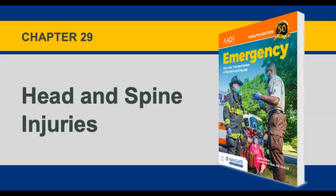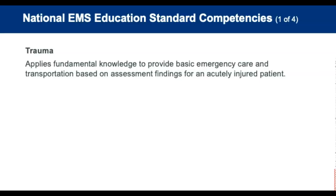Hello, and welcome to Chapter 29, Head and Spine Injuries of the Emergency Care and Transportation of the Sick and Injured, 12th edition. After you complete this chapter and the related coursework, you will understand how to manage trauma-related issues of the head and spine. You will learn how to recognize life threats associated with these injuries, as well as the need for immediate spinal stabilization and potential airway and breathing support. The curriculum includes details, anatomy and physiology of the nervous system, and the pathophysiology, assessment, and management of traumatic brain and spinal cord injuries. This chapter provides details about traumatic brain injury, including initial mechanism of injury and primary versus secondary injury.